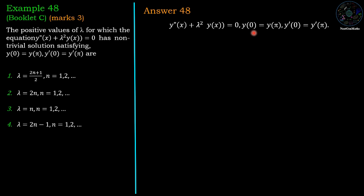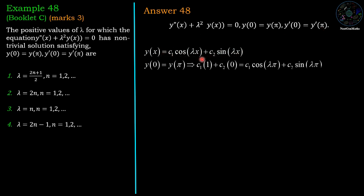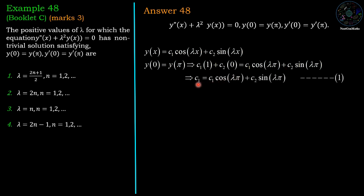Now we apply the condition y(0) = y(π). Substituting x = 0 gives c₁cos(0) + c₂sin(0) = c₁. On the right-hand side, x = π gives c₁cos(λπ) + c₂sin(λπ). So the first equation is: c₁ = c₁cos(λπ) + c₂sin(λπ).